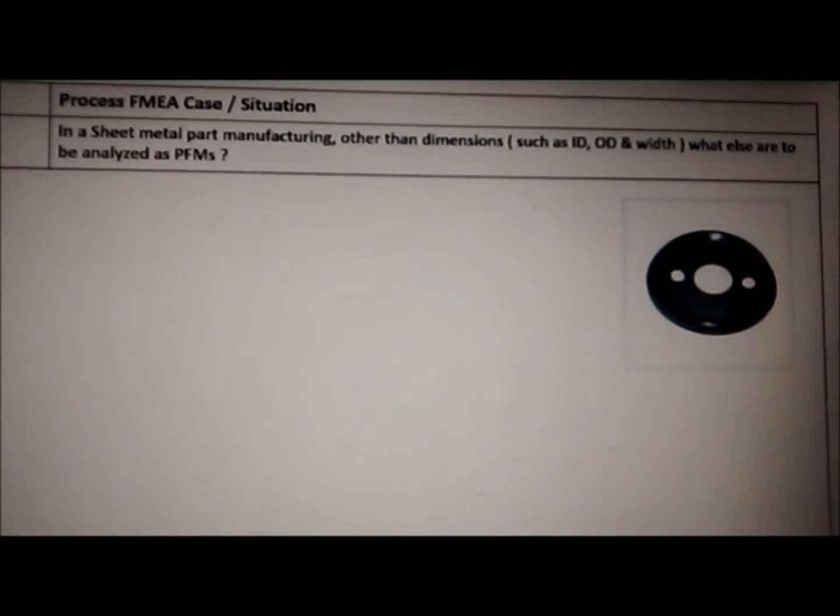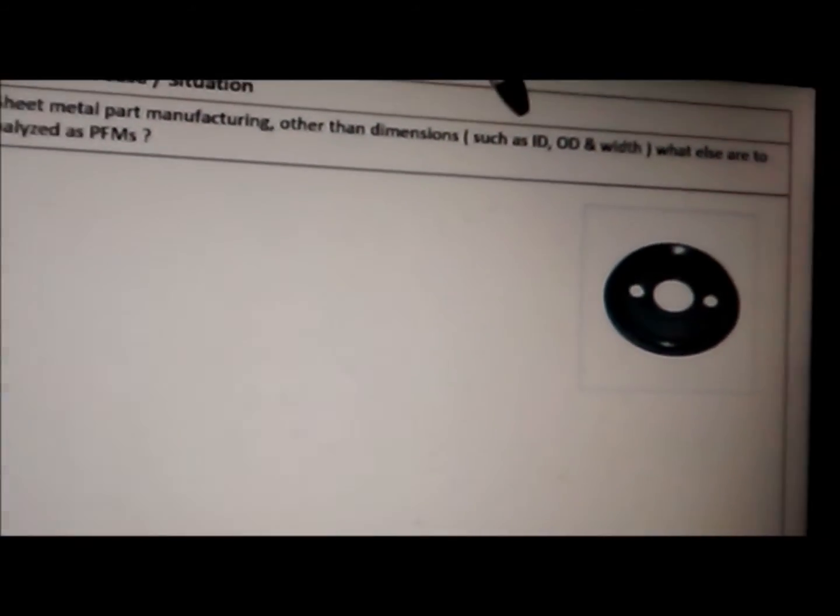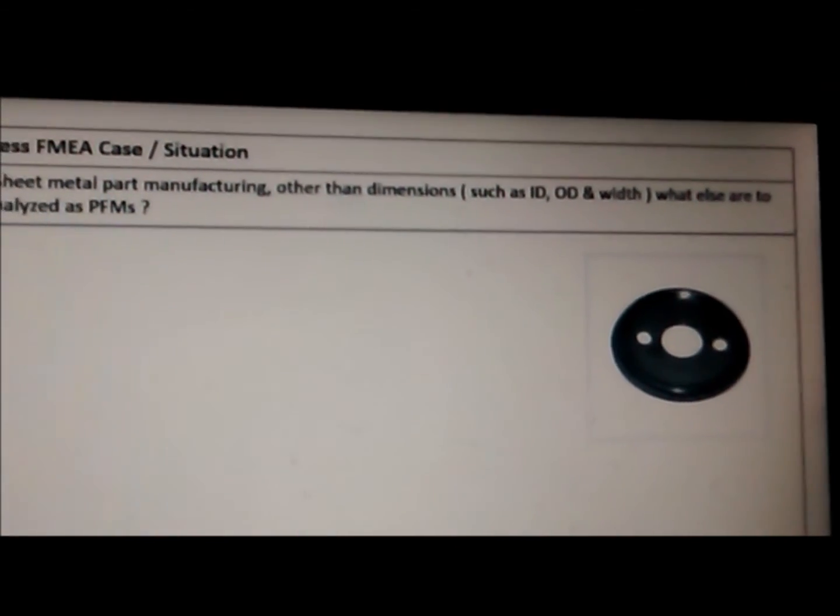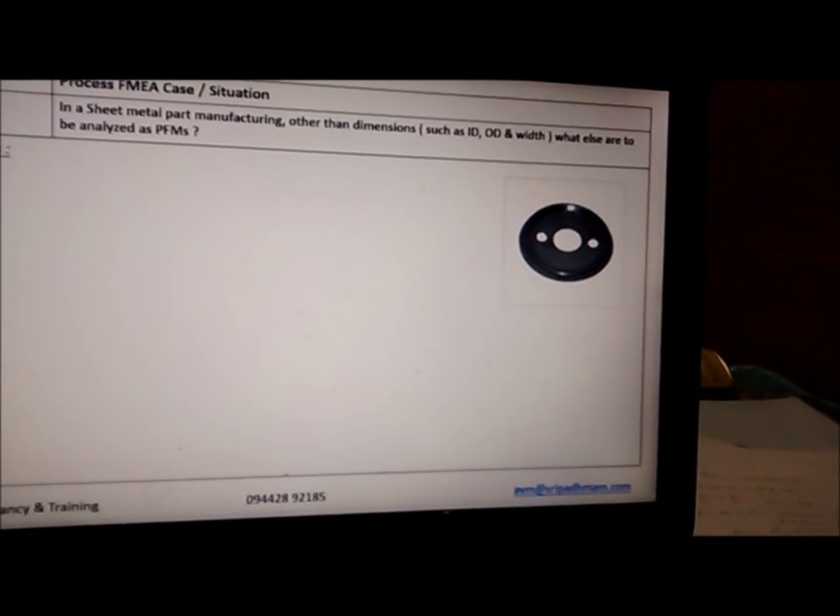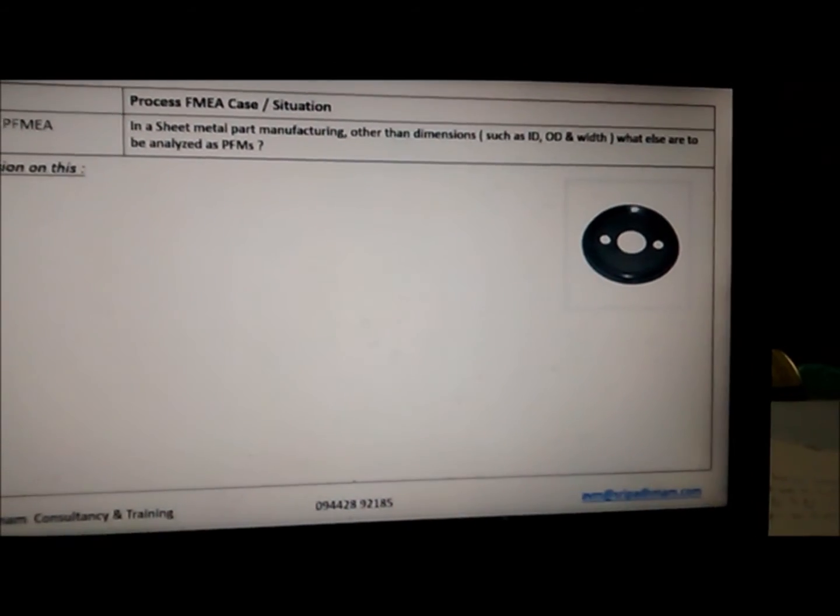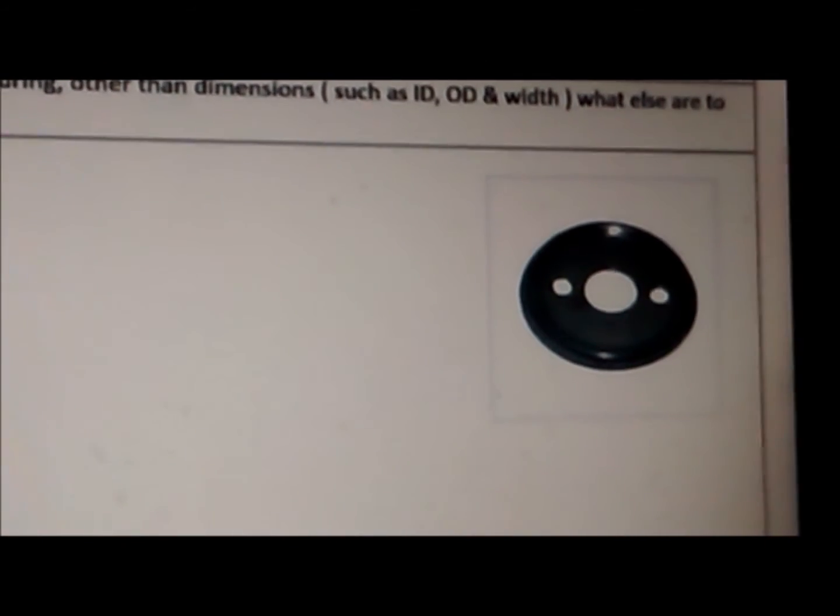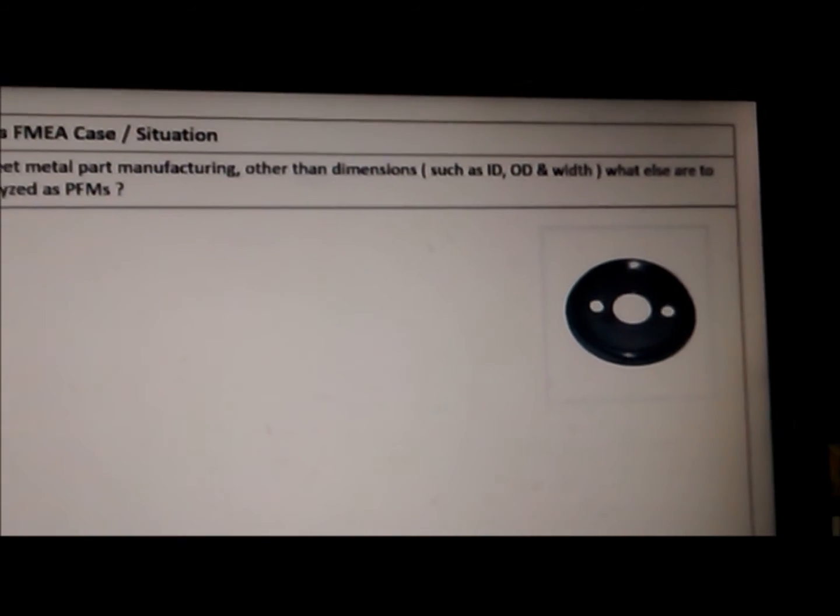Generally, the FMEA team may not miss inner diameter ID, outer diameter OD, or the width, width or height. But what are all the other possible failure modes hidden out in this particular part? Again, if the part, the process are not properly understood, we cannot arrive at meaningful failure modes. Missing of failure modes is quite dangerous.